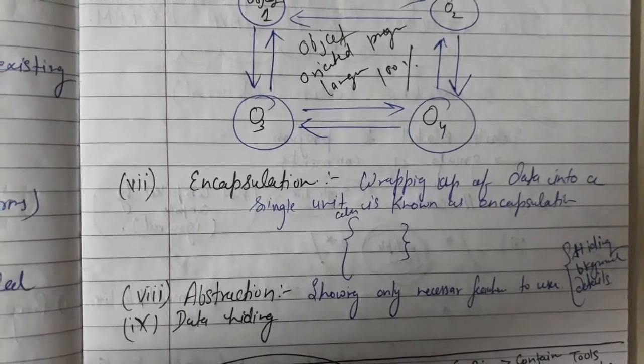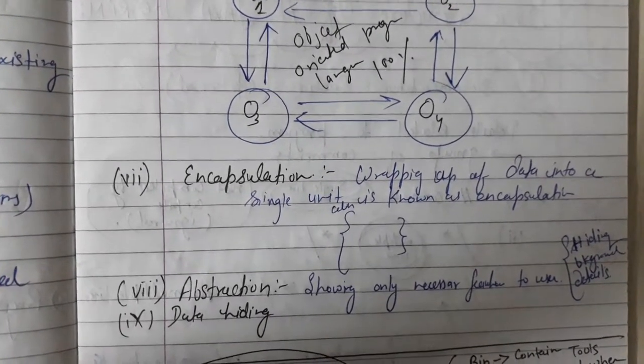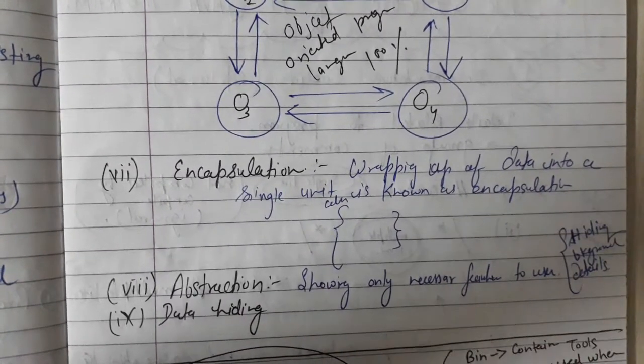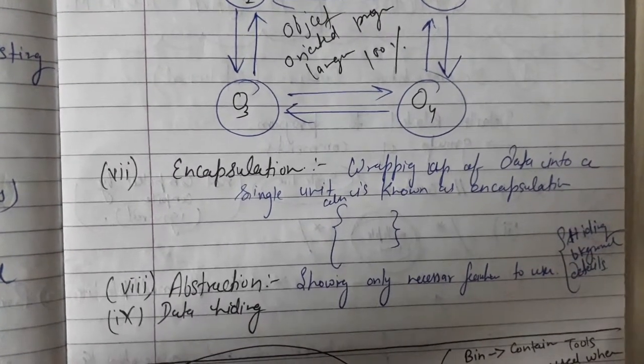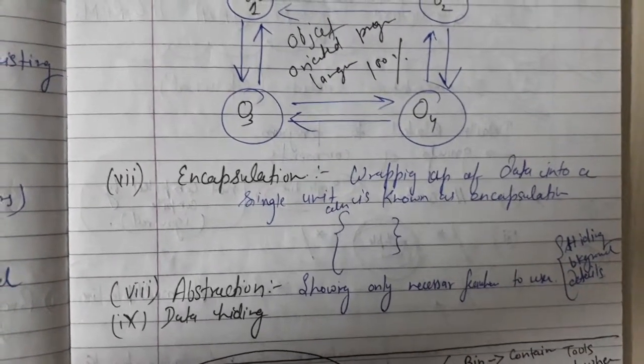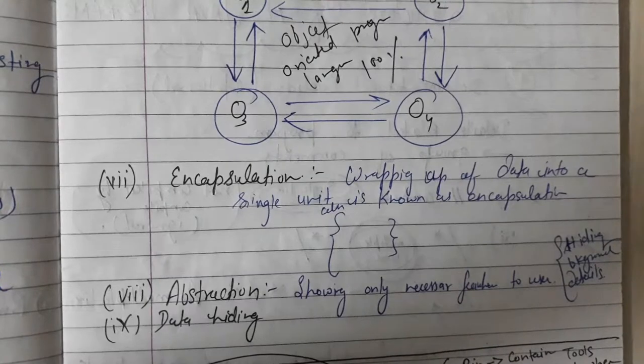Abstraction means that we show essential features and hide non-essential features. Data hiding makes Java a very secure language.